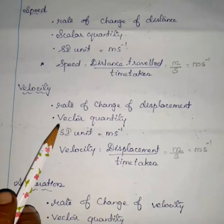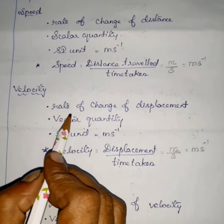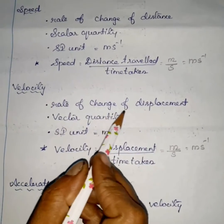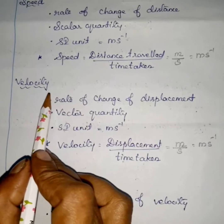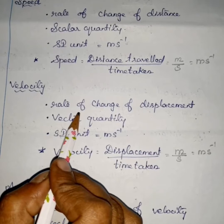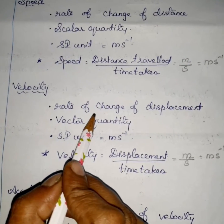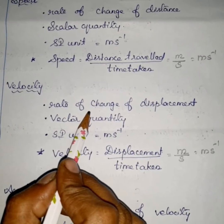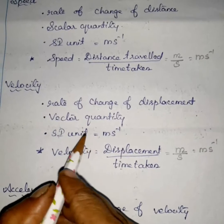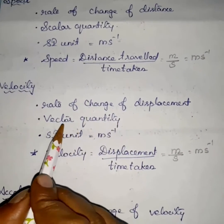Next, we are going to study velocity. What is velocity? Velocity is the rate of change of displacement. Rate of change of displacement, or displacement covered in unit time, is called velocity. Speed with direction is called velocity. It is a vector quantity — it is having both magnitude and direction.